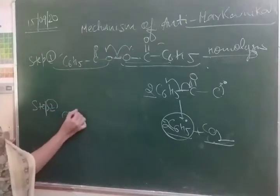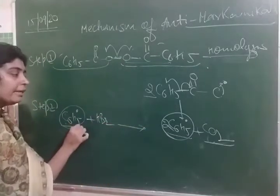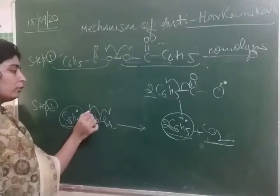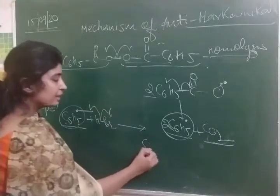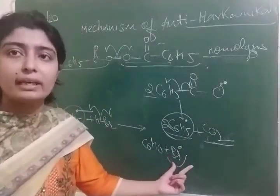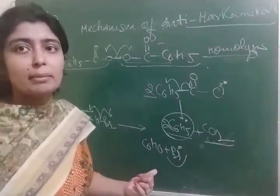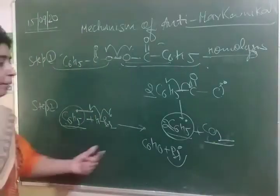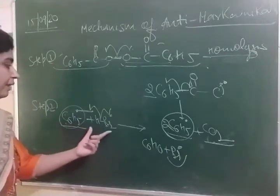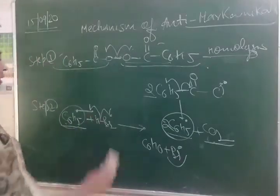In step two, the phenyl radical (C₆H₅•) reacts with HBR. When a radical attacks any molecule as a reagent, that molecule also undergoes homolytic cleavage. So HBR breaks homolytically: the phenyl radical combines with H to form C₆H₆, and Br• (bromine radical) is separated out. So now we have the Br radical.